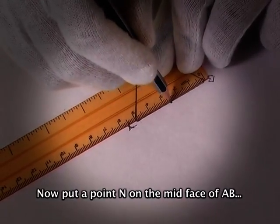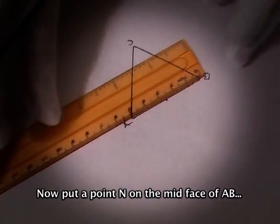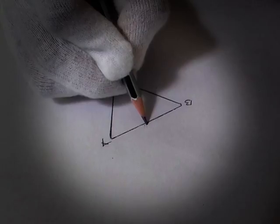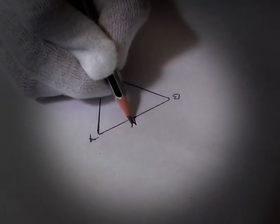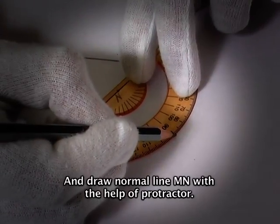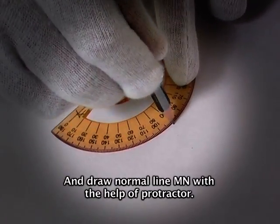Put a point N on the mid-face of AB and draw normal line MN with the help of protractor.